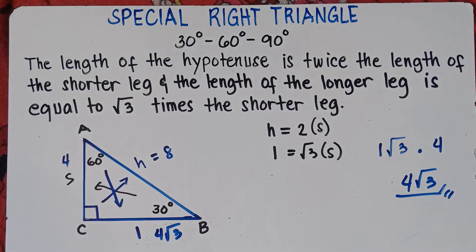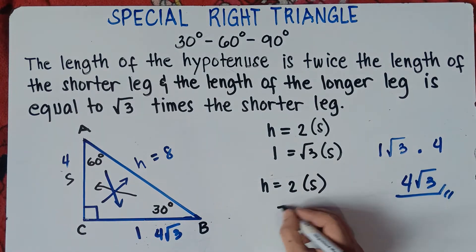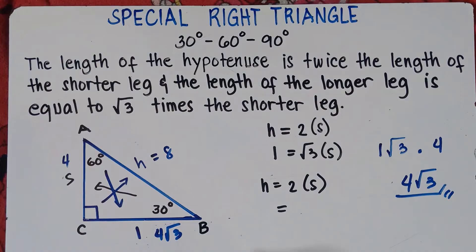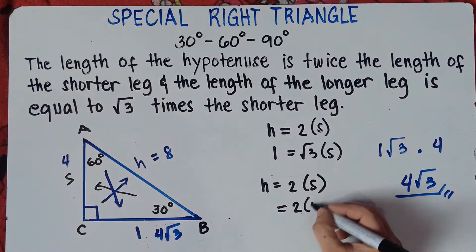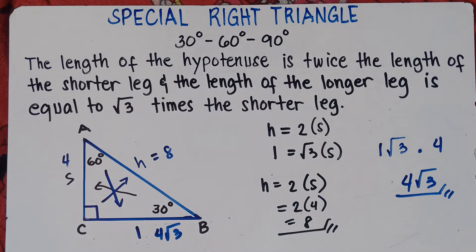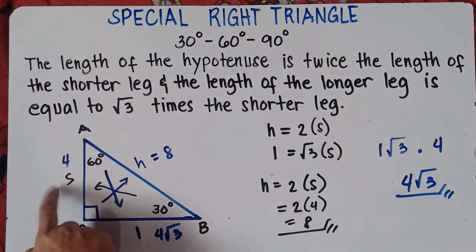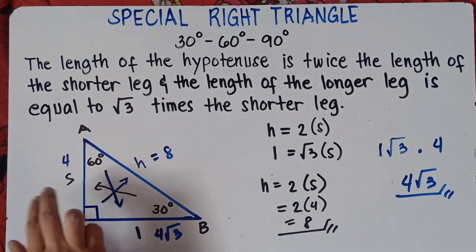So in finding the hypotenuse and longer leg when given the shorter leg: hypotenuse = 2 times S, so 2 times 4 equals 8. Just remember — if you have the shorter leg, multiply by 2 to get the hypotenuse, because the hypotenuse is twice the shorter leg.